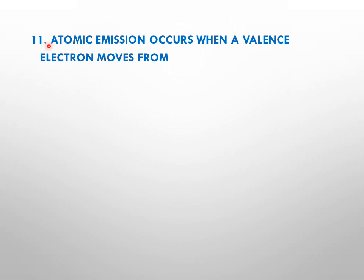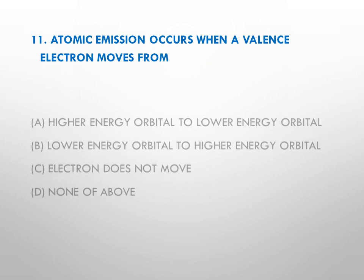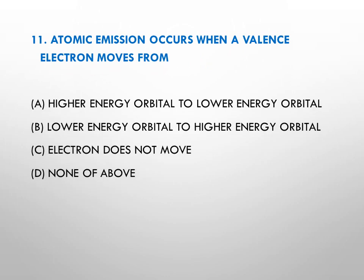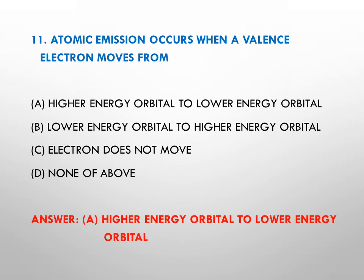Question number eleven: atomic emission occurs when a valence electron moves from — options: A from high energy orbital to lower energy orbital, B from lower energy orbital to higher energy orbital, C electron does not move, D is none of above. The right answer is A — atomic emission occurs when an electron moves from a higher energy orbital (excited state) to a lower energy orbital (ground state).